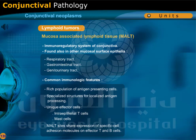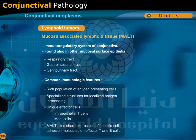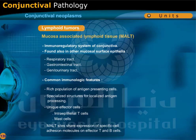Mucosa-associated lymphoid tissue, or MALT, is the immunoregulatory system of the conjunctiva, found also in other mucosal surface epithelia like the respiratory tract, gastrointestinal tract, and genitourinary tract. Common immunologic features include a rich population of antigen-presenting cells, specialized structures for localized antigen processing, unique effector cells including intraepithelial T cells and mast cells, and shared expression of specific cell adhesion molecules on effector T and B cells.